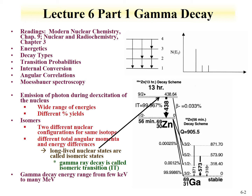We've already discussed isomeric states, and here's an example of an isomeric state: zinc-69M, which has an excited nuclear state. An isomer, as we discussed earlier, represents two different configurations of the same isotope. They have different total angular momenta and different energies.